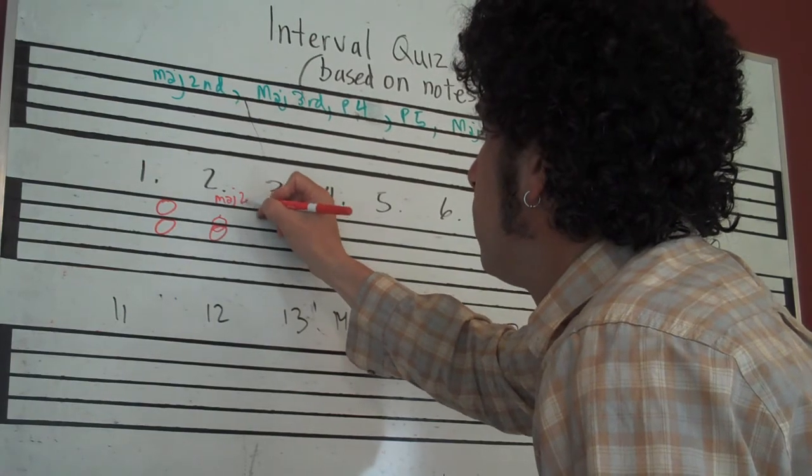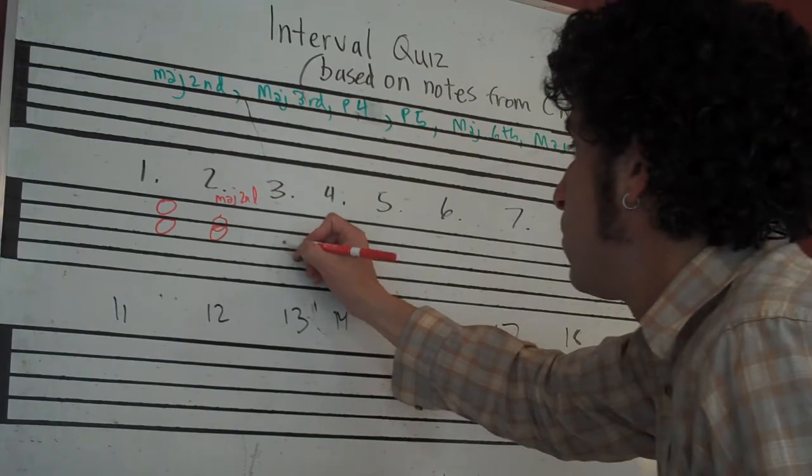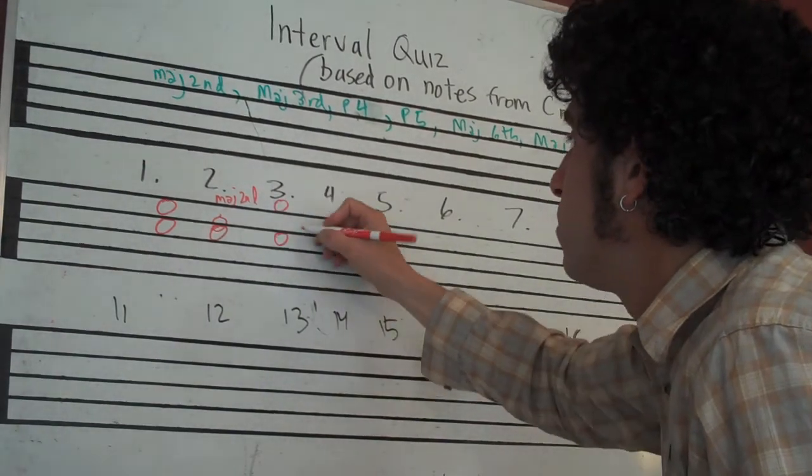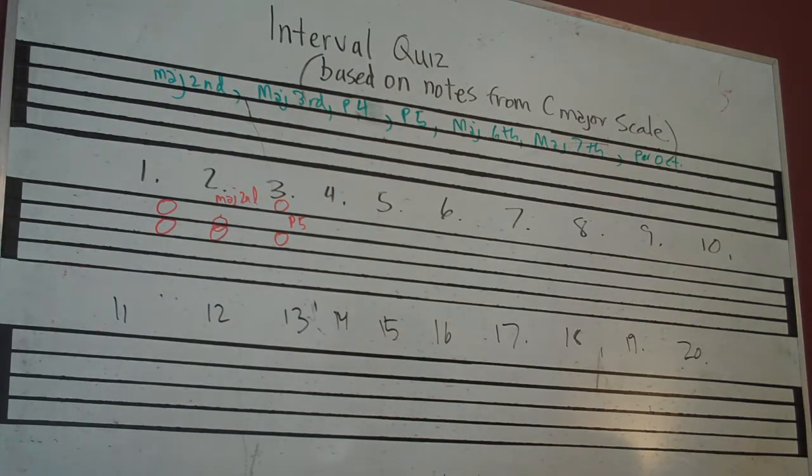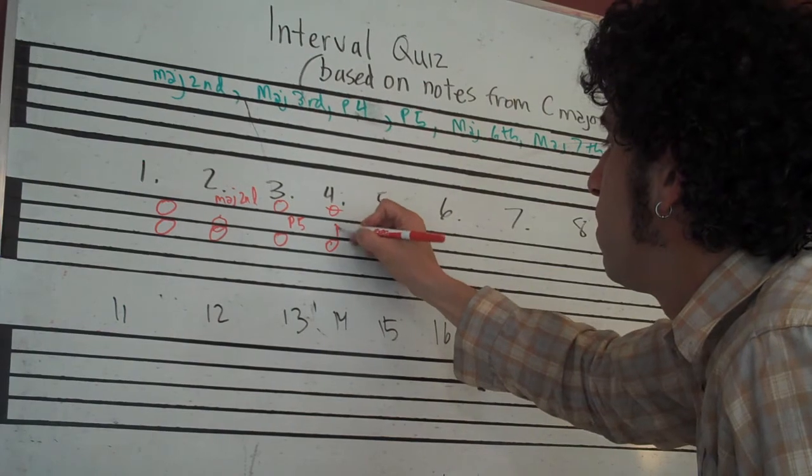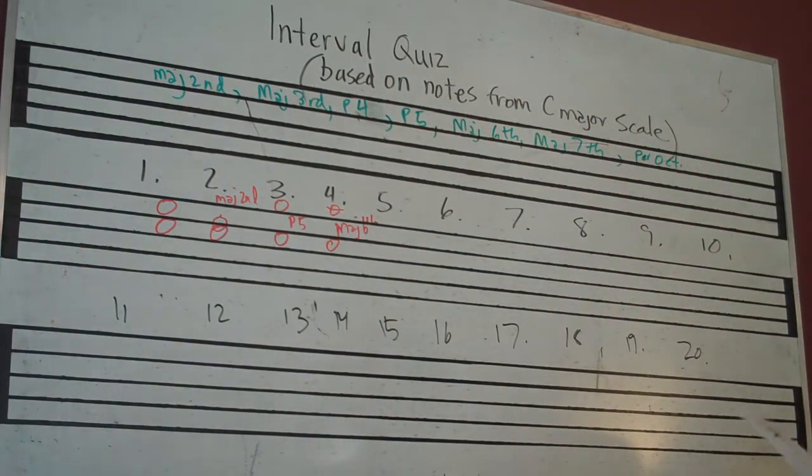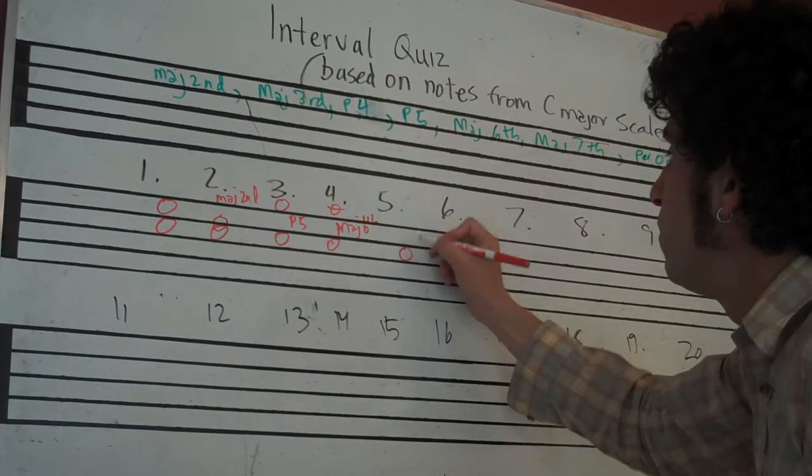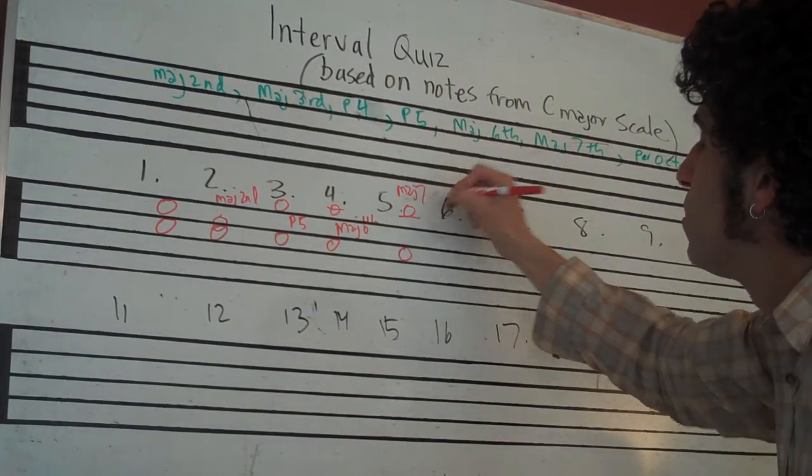Major second. Number 3 was a perfect fifth, C and G. Perfect fifth. Number 4 was a major sixth, C and A. Major sixth. Number 5 was major seventh, C and B. Major seventh.